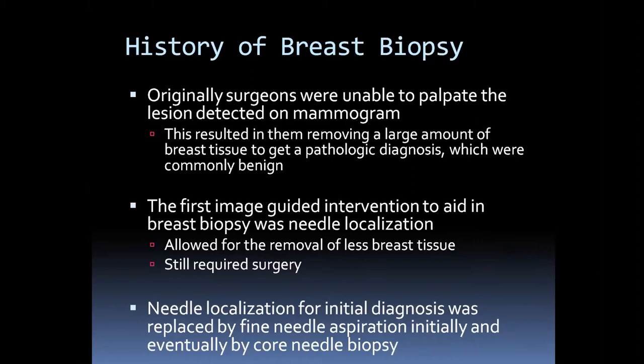It's important to know the history of breast biopsies to understand why we have the techniques we have. Originally, when surgeons were unable to palpate a lesion detected on mammograms, they had no way of removing it precisely, so they had to remove large amounts of tissue to get a pathologic diagnosis. Many of these conditions were benign, leaving women with large surgical deformities. This led radiologists and surgeons to develop a new approach. The first image-guided intervention was needle localization — the patient still required surgery and anesthesia, but imaging allowed placement of a wire into the mammographic finding, enabling significantly less breast tissue to be removed.